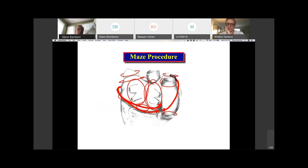So if we look at the maze procedure, all these circles here and lines that you see here are the macro reentrant circuits that are associated with the maze four procedure, and obviously they are numerous. And that's why there are so many lesion sets to address all of those issues. When you do the maze procedure, and the Cox four maze procedure specifically, this is what you end up with so that all of those macro reentrant circuits are gone.